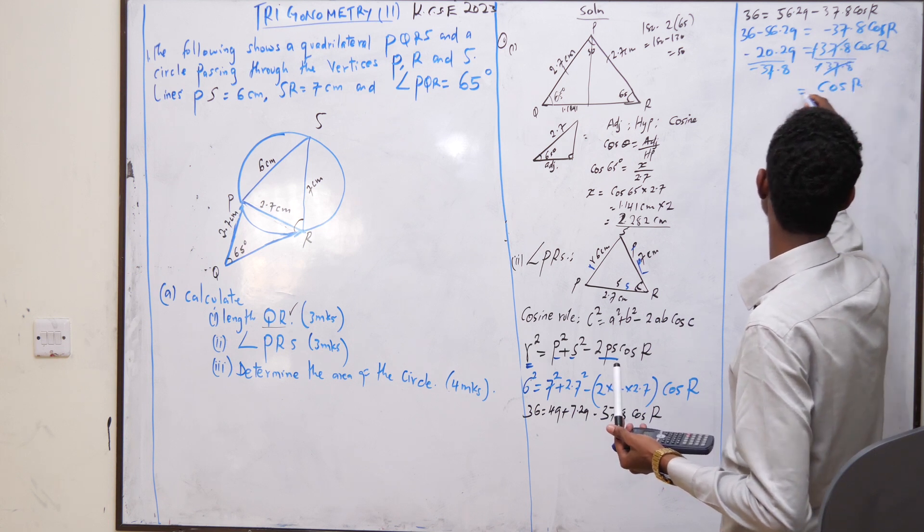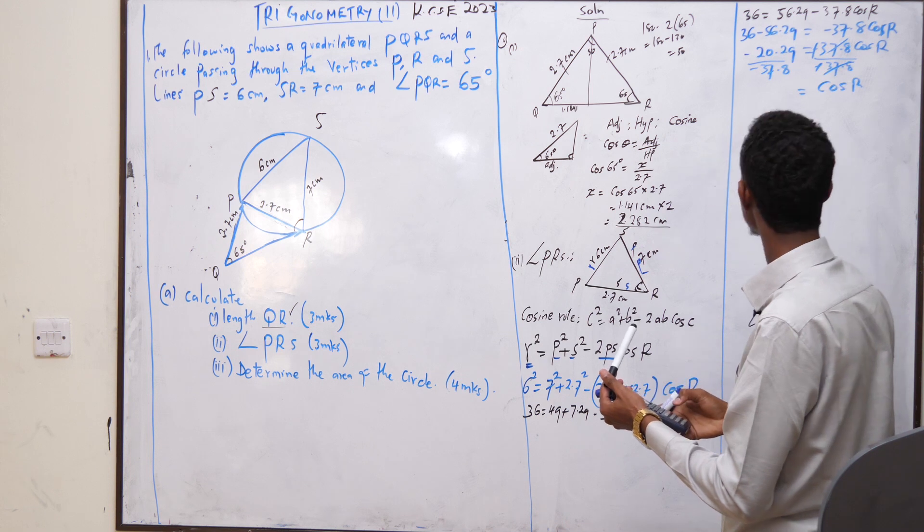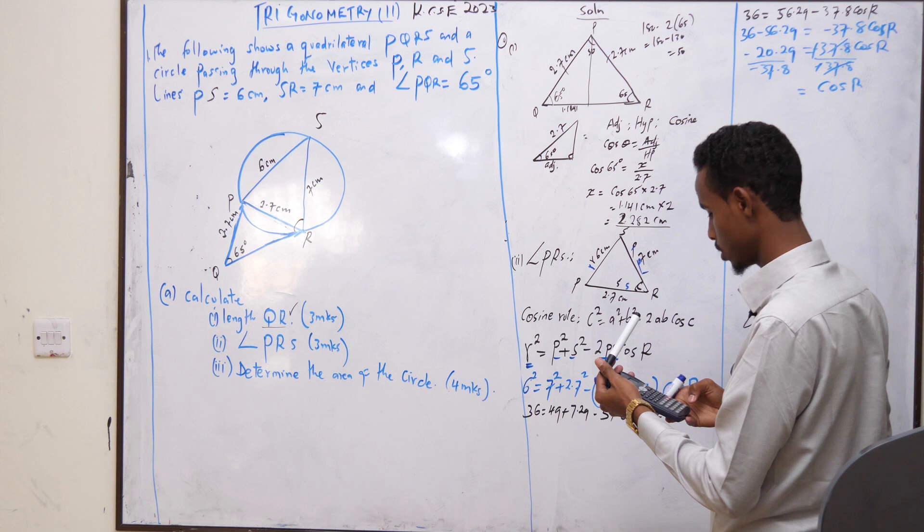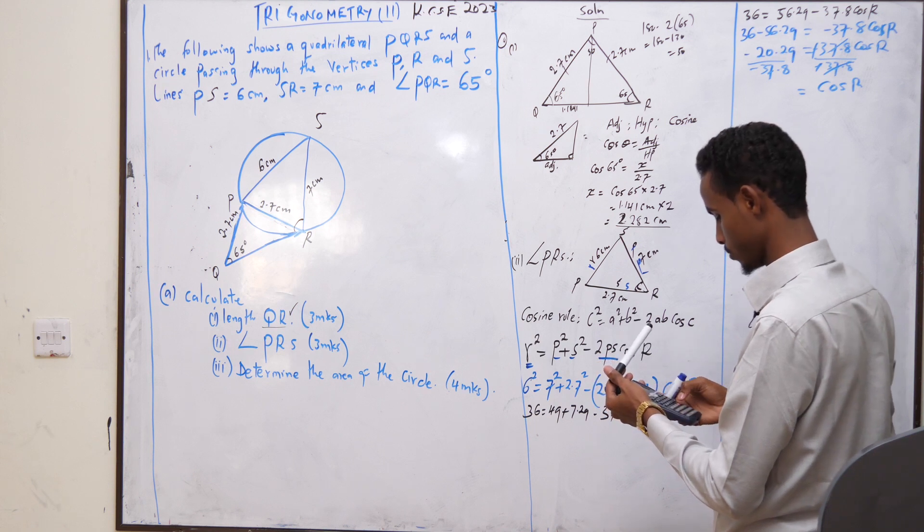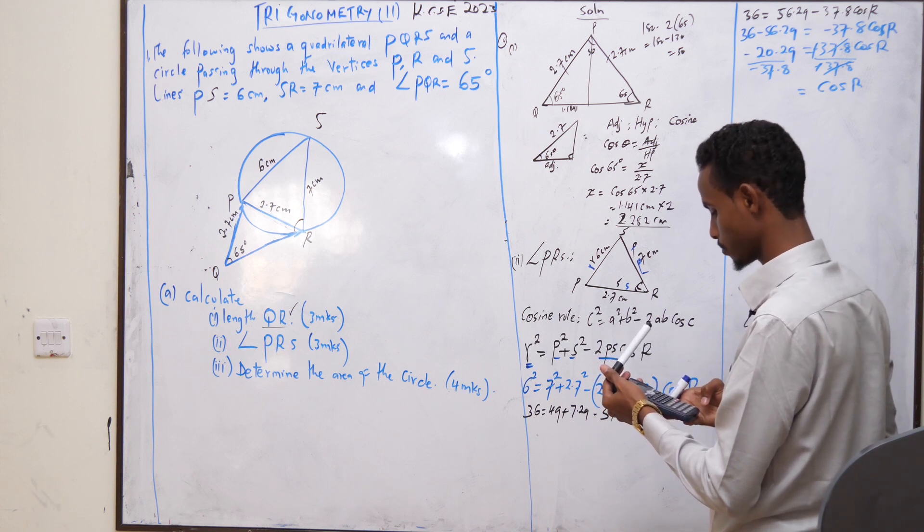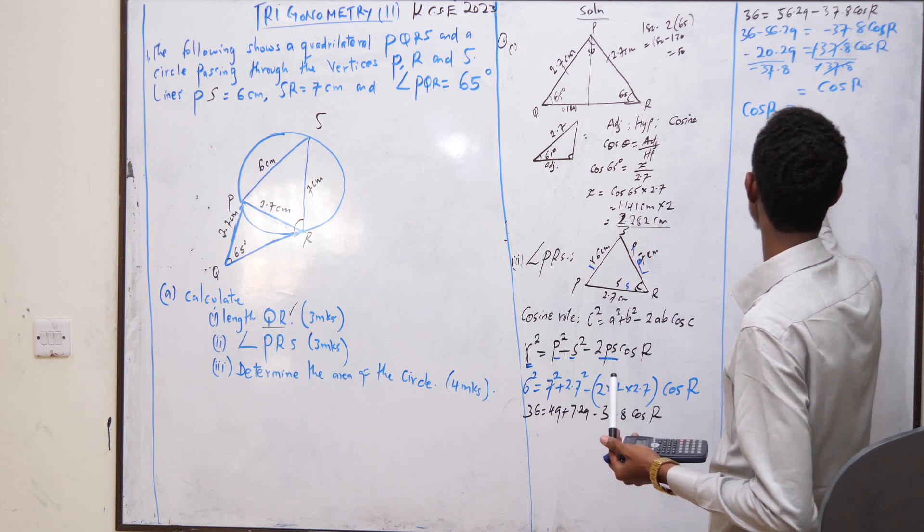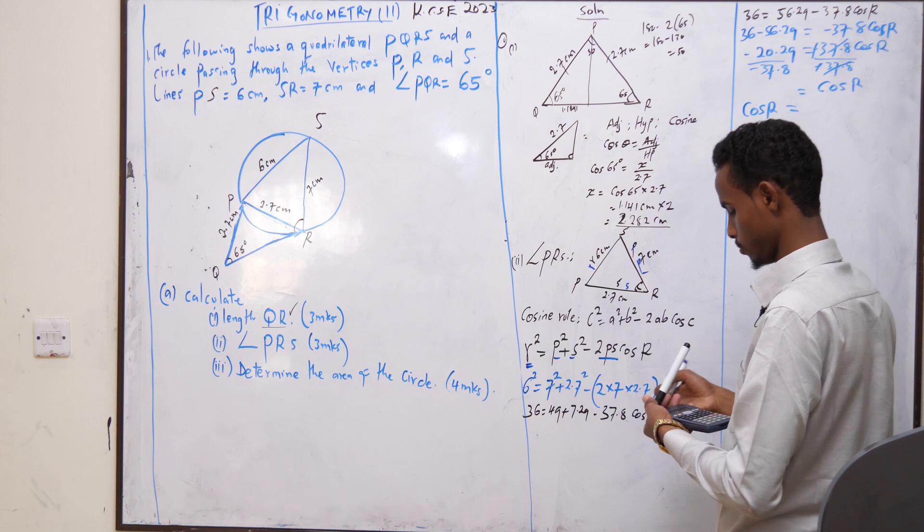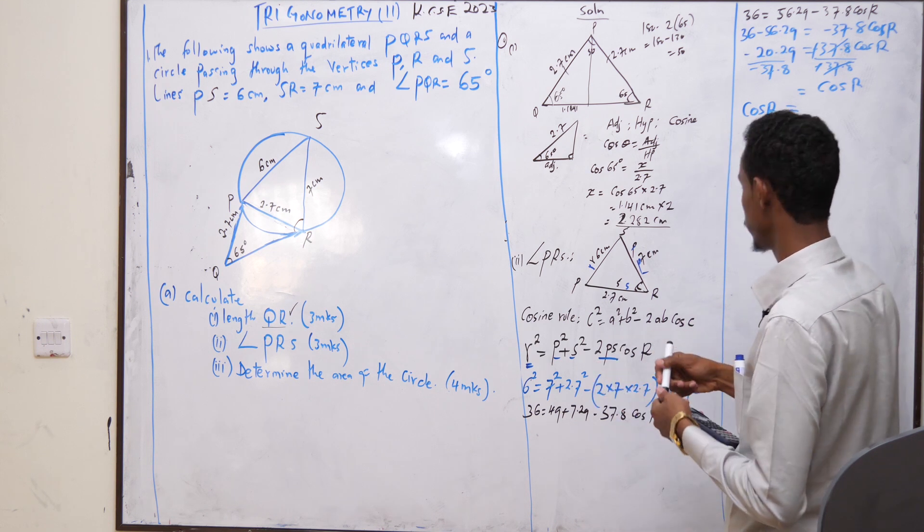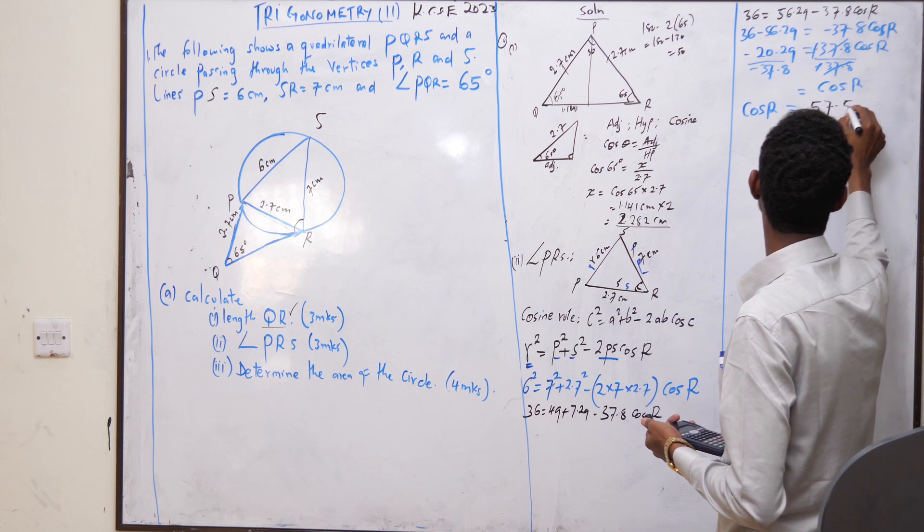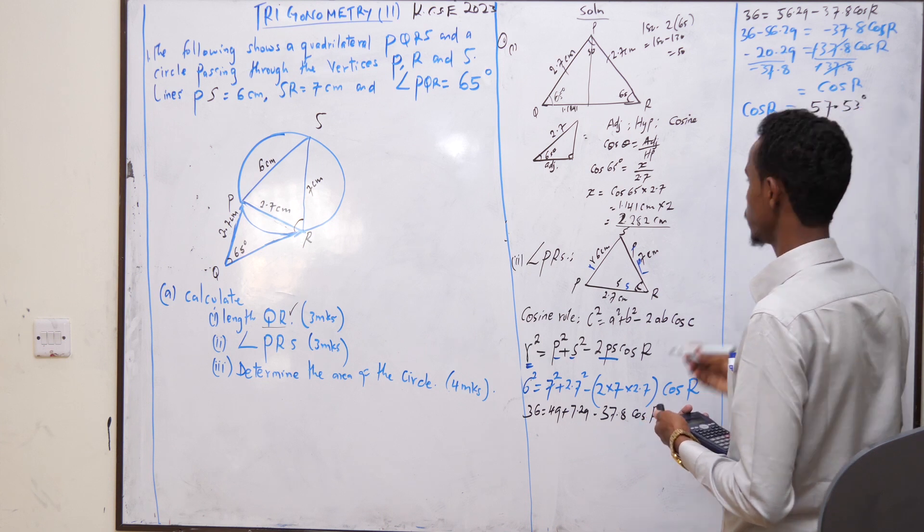Cos R will be equal to negative 20.29 divided by negative 37.8. Shift cos inverse answer. That becomes, now cos R now becomes 57.53, 57.53 degrees.